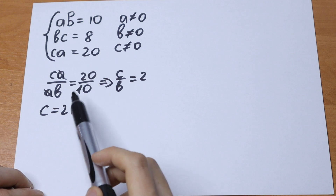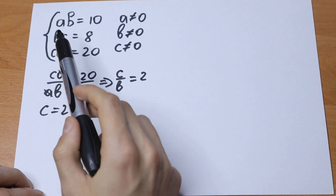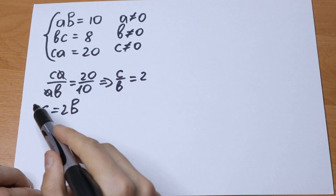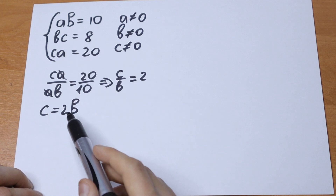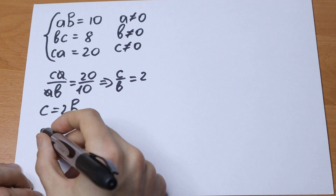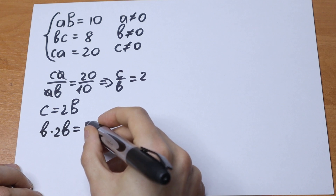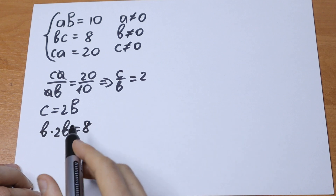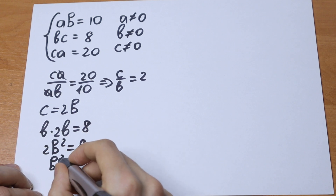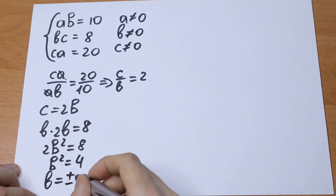So we know how to express C in terms of B. Let's find the equation with C and B, so we can substitute C in that equation. We have the second equation BC, so we put 2B in place of C because C equals 2B. Writing the second equation: B times 2B equals 8. We will have 2B squared equal to 8, so B squared equals 4.